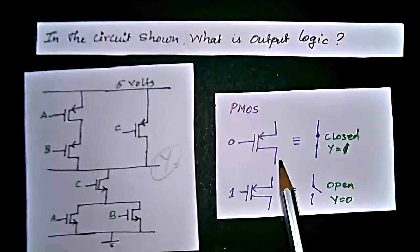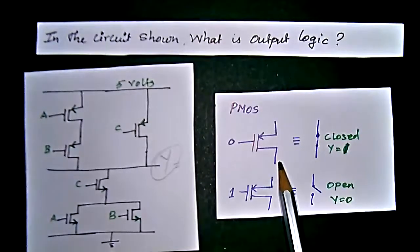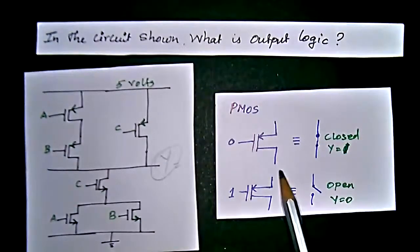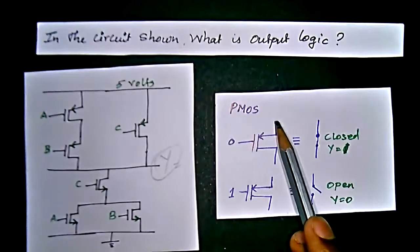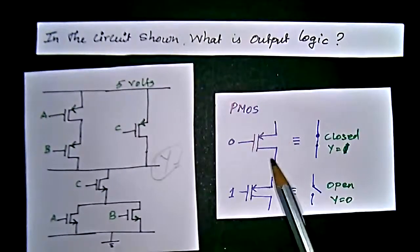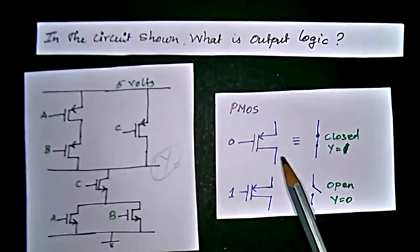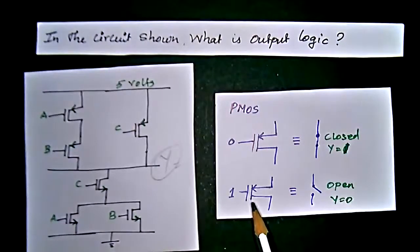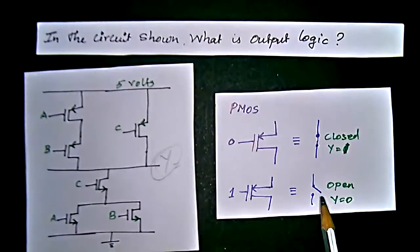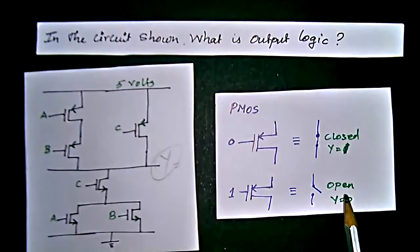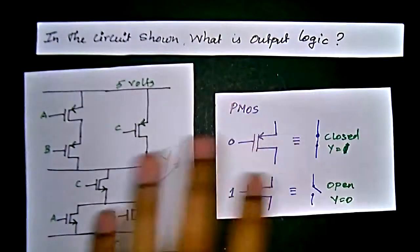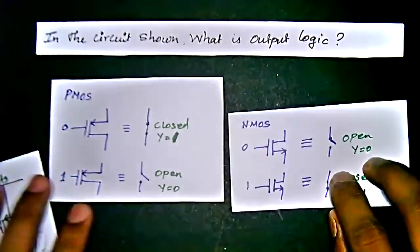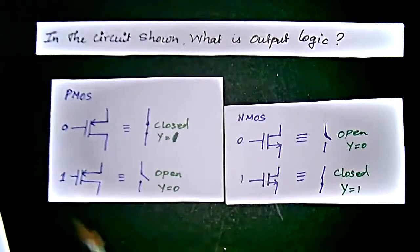So we will get Y equal to 0, that is if this terminal will get the Y value equal to 0. That is output: whatever the input plus VC given to here will automatically get here. So when PMOS getting 1 value, that is logic high value, that will be acted as an open switch so Y equal to 0.